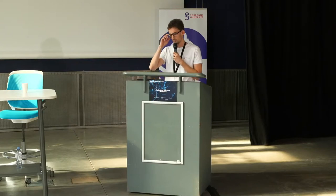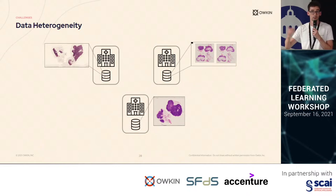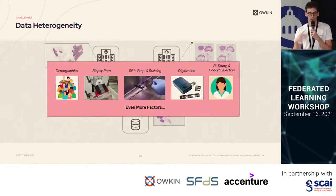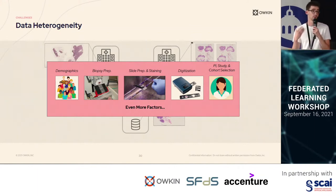The last challenge we face is data heterogeneity. Here are examples of images created at different hospitals. Due to the varying chemical compounds used to stain the slides, this led to slightly different colors — you really see it when you look at the histogram. And this is just the visible part. In fact, you can have many more factors of variability, such as demographics, the techniques used to prepare the data, and the way the cohort was built, since we are using retrospective cohorts built for specific purposes.